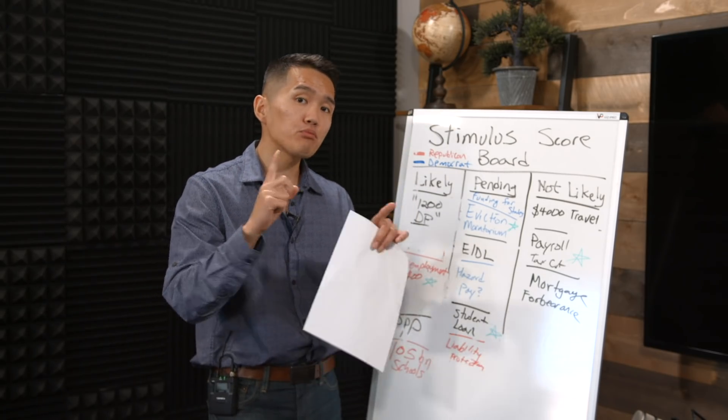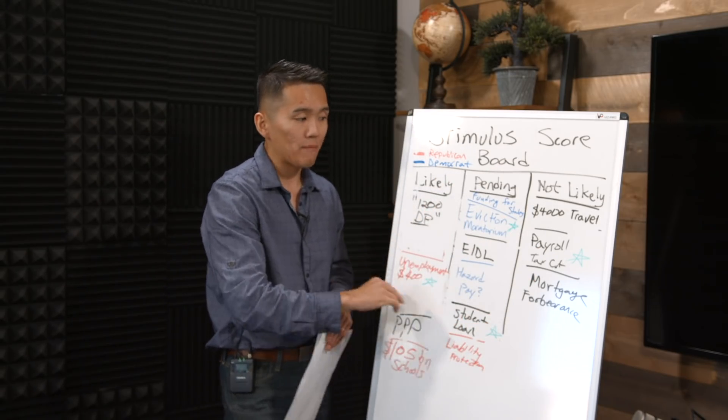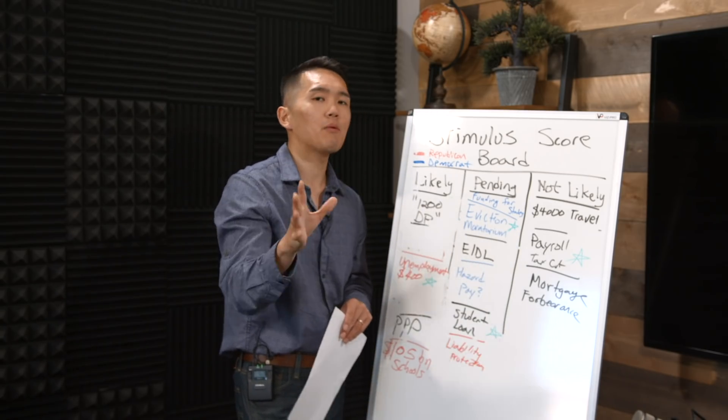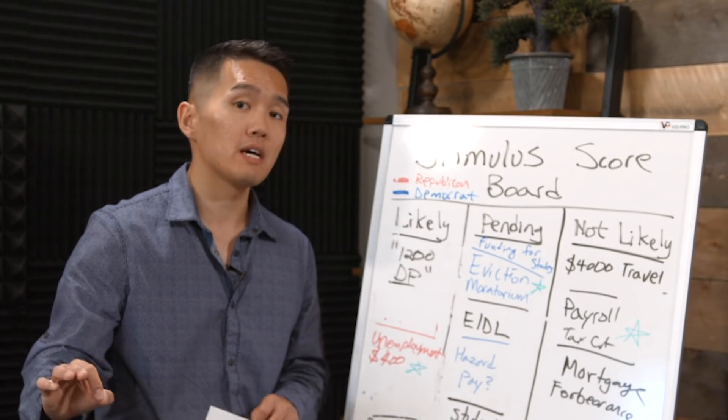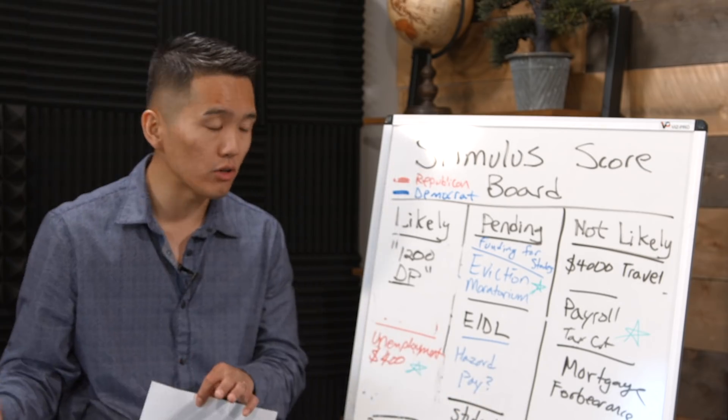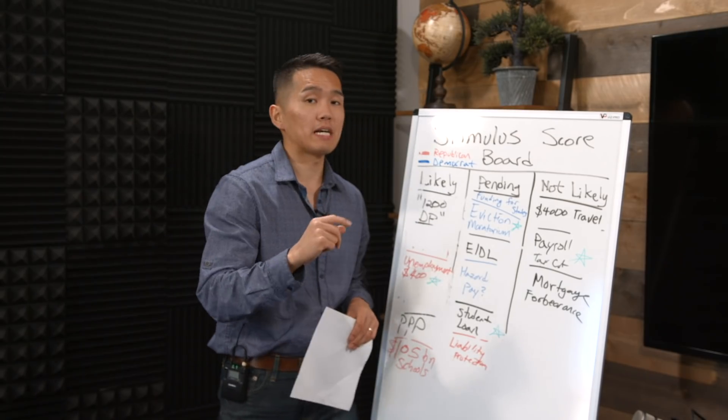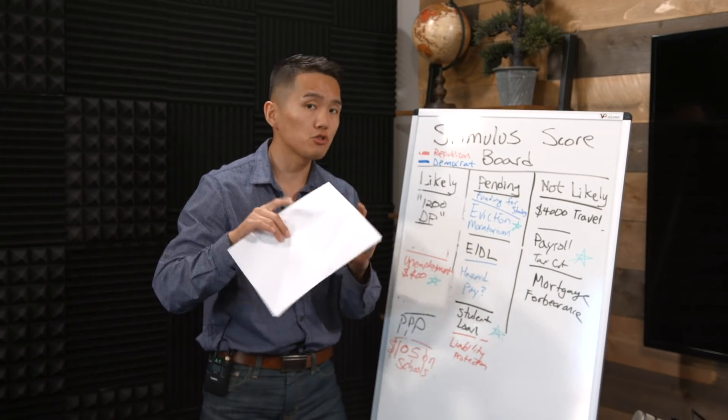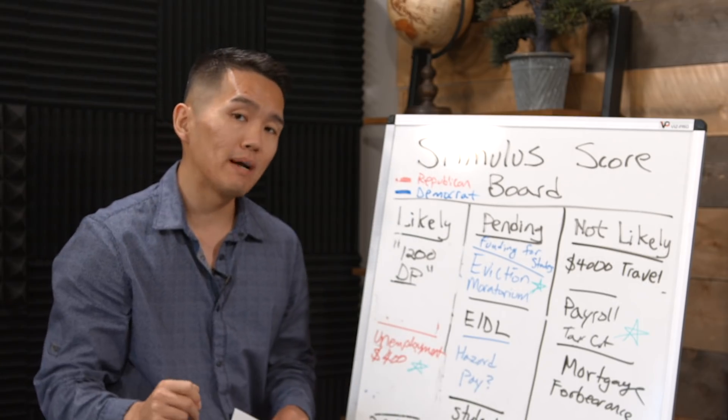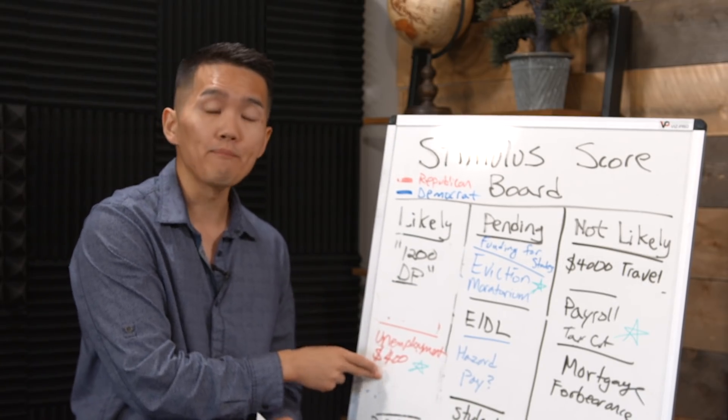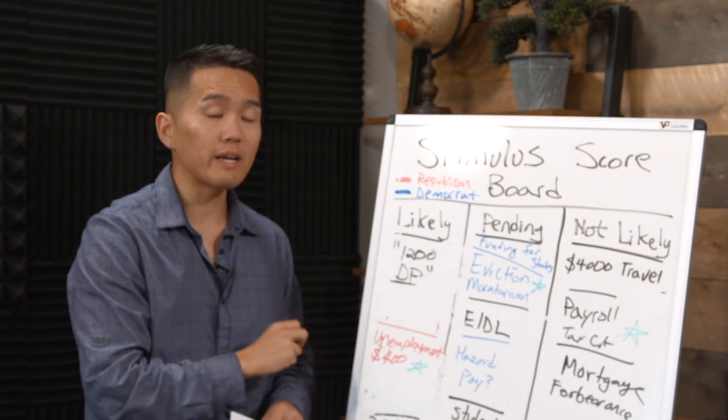The question that's floating around right now is, can the President really sign an executive order enacting some of these provisions? The big item that's being challenged is the payroll tax deferment, because the current argument is that the President cannot make any changes to the tax laws by his executive order. It has to go through Congress. That could very much be challenged through the court system. President Trump will reappropriate funding from FEMA to fund the unemployment benefit of $400 a week.